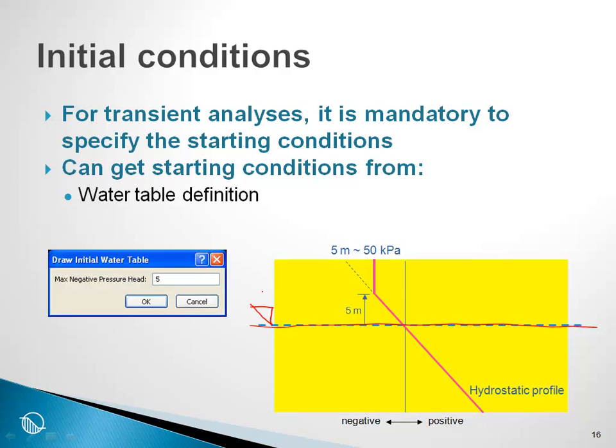Based on hydrostatic conditions, we compute the pore pressure within each element based on a hydrostatic assumption of the pore water pressure being positive under the water table. Above the water table, we go hydrostatically negative, we make the pore pressure negative up to some user-specified height here.